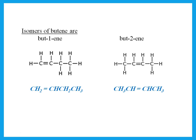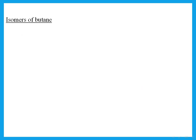Isomers are two or more compounds with the same molecular formula but different displayed formulas. For example, isomers of propanol (three carbons, –OH): the –OH can be on one end (propan-1-ol) or in the middle (propan-2-ol). Both have the same molecular formula but different structures.